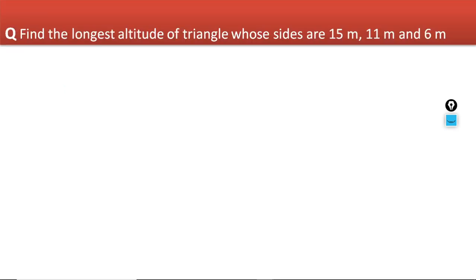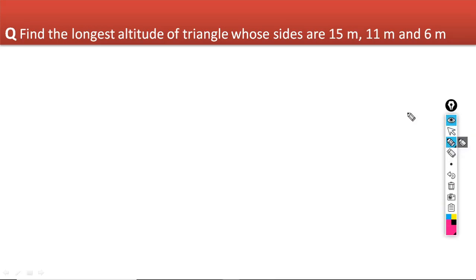This is the first problem. Find the longest altitude of a triangle whose sides are 15m, 11m and 6m. In this question, it is asked to find the longest altitude of a triangle and the sides are given. For understanding this concept, you know that the area of a triangle is always equal to half base into height.